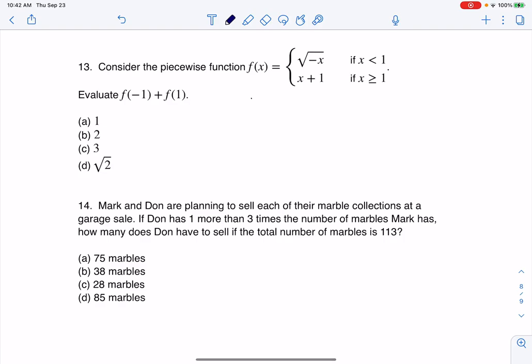So let's find f of negative 1 and add to it f of 1. So let's start inside the parentheses, negative 1. We've gotta figure out which piece this goes into.